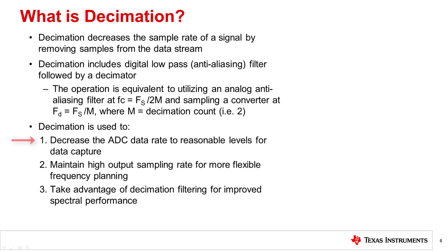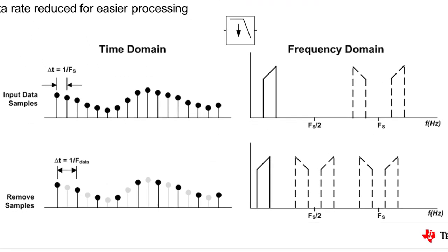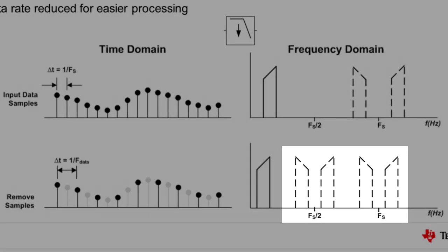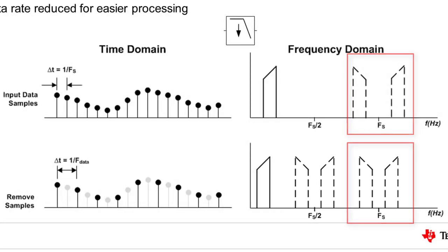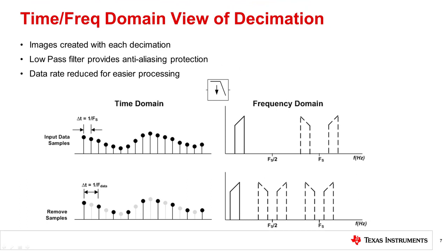Decimation is used to decrease the sample rate to levels that the device can handle, allowing for high sampling rates for more flexible frequency planning and filtering that provides improved spectral performance. An example of the decimation function is shown in both the time domain and frequency domain. When decimation is performed, images are created. The signal and images around the sample rate will shift down to the sample rate divided by 2. Low-pass filters are then used to provide anti-aliasing protection, removing these images and allowing for a clean spectrum at a much lower data rate.